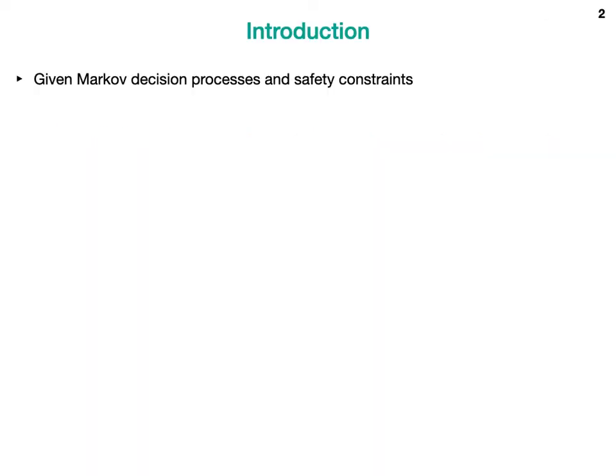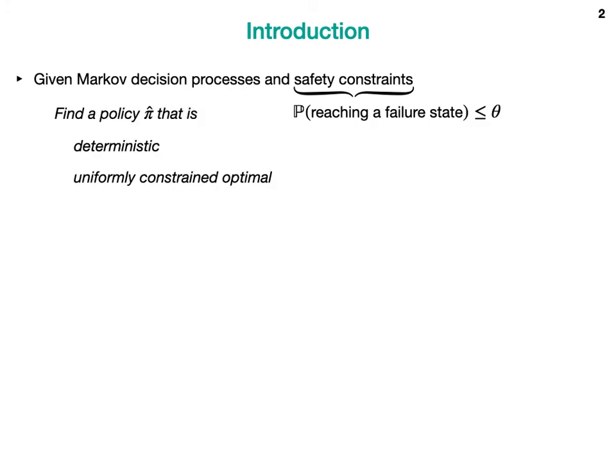The problem we consider is optimizing a Markov decision process under safety constraints, defined by a probabilistic reachability of a set of failure states being less than or equal to a given threshold. Specifically, we try to find a policy that is deterministic and uniformly constrained optimal.